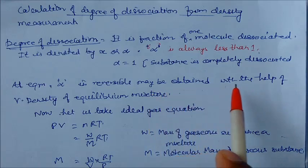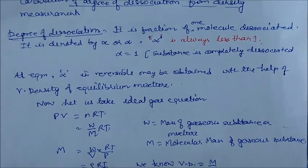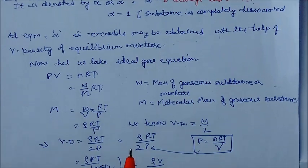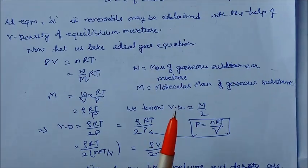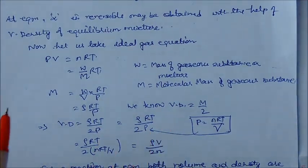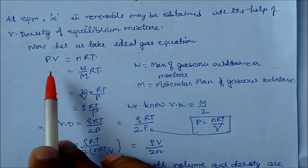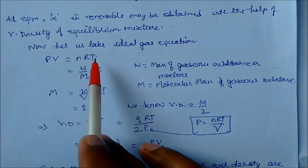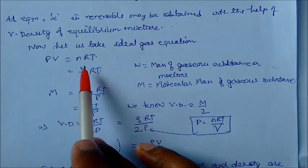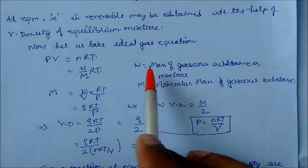At equilibrium, alpha (which is reversible) may be obtained with the help of the vapor density of the equilibrium mixture. So here we are introducing the term 'vapor density of equilibrium mixture.' Let us take the ideal gas equation PV = nRT.